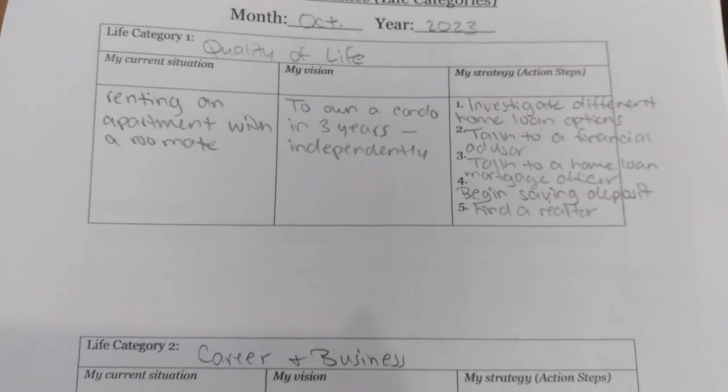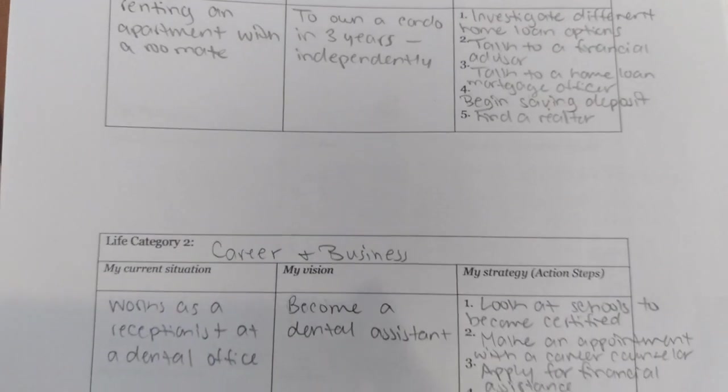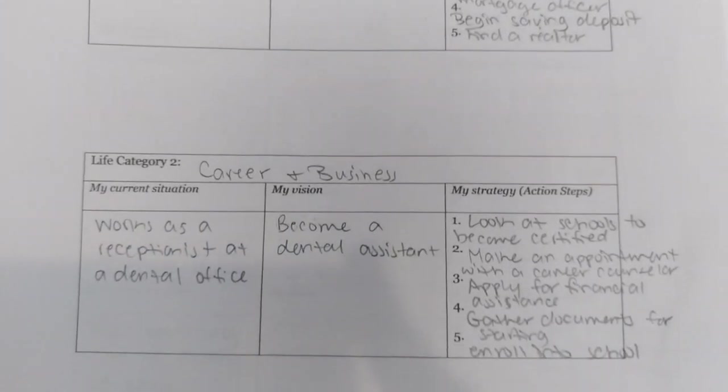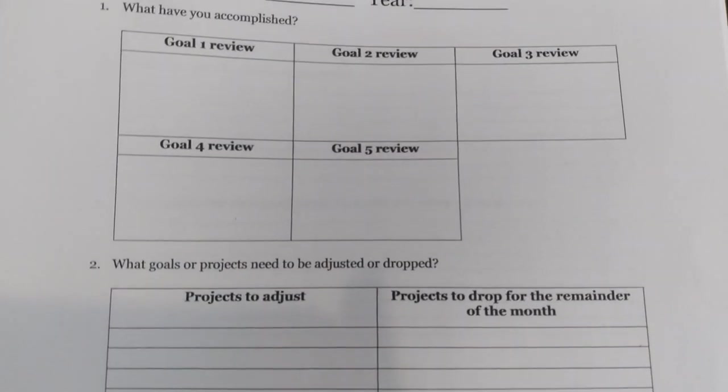She's going to want to start with a month at a glance to get an overview on her goal for each life category and the next steps to achieve that goal for the next 30 days.